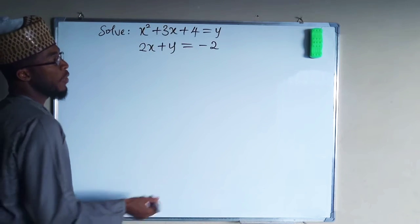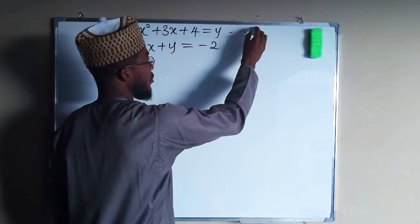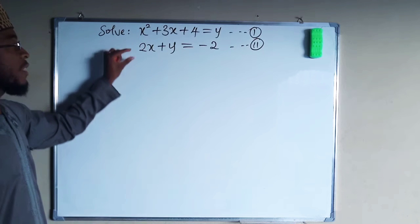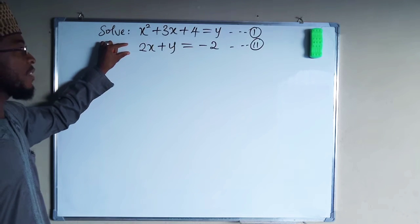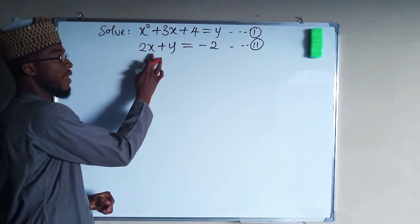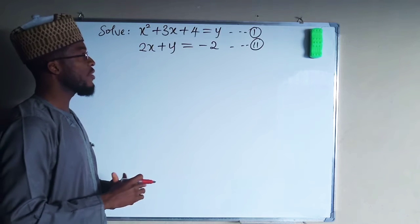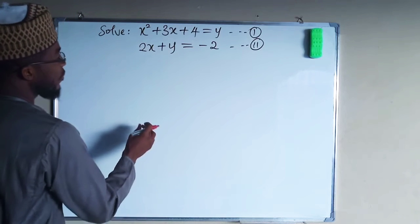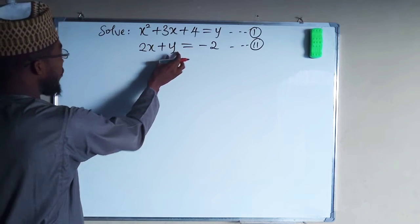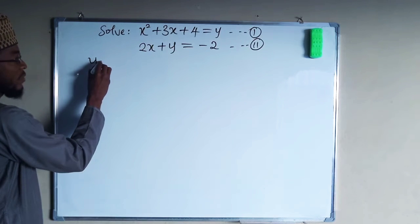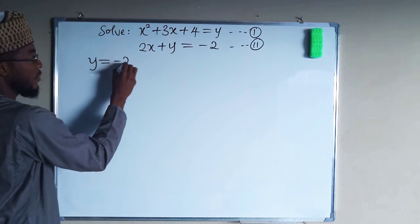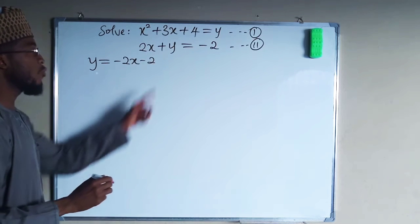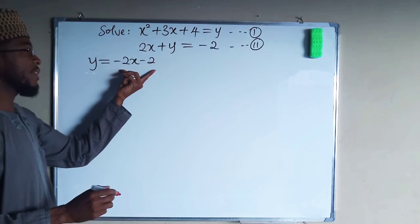For these equations, we can call this equation number one and this other one equation number two. Equation two is a linear equation, so you can make either x or y the subject, then substitute it into equation one. Let's make y the subject, giving us y equals negative 2x minus 2.